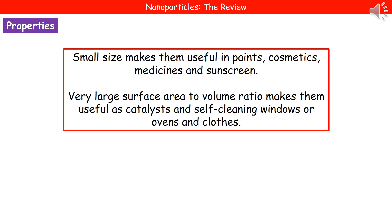So why do we care about nanoparticulates? The key reason is that nanoparticles are so small that it makes them incredibly useful in a range of different applications — everything from paints to sunscreens to medicines. One of the key reasons they're so useful is because they've got an incredibly large surface area to volume ratio. Because of that, they're incredibly useful as catalysts and as things like self-cleaning windows or self-cleaning ovens.